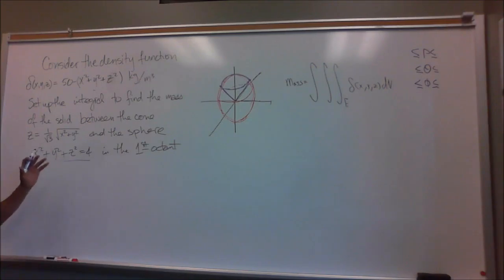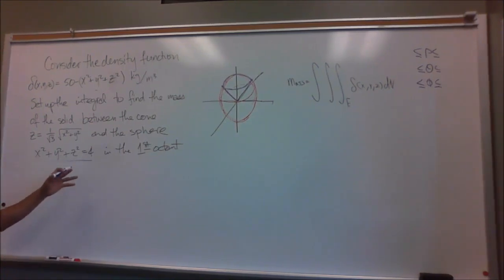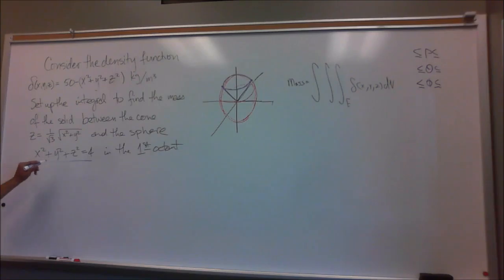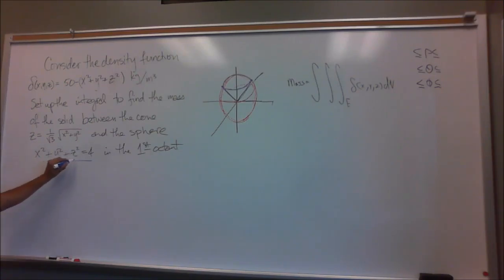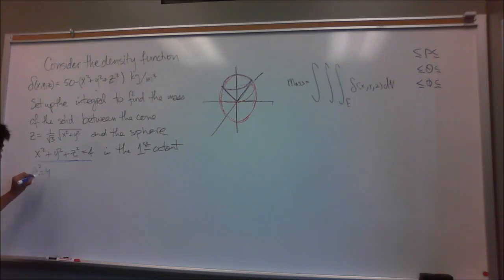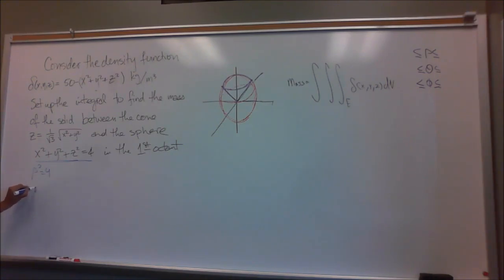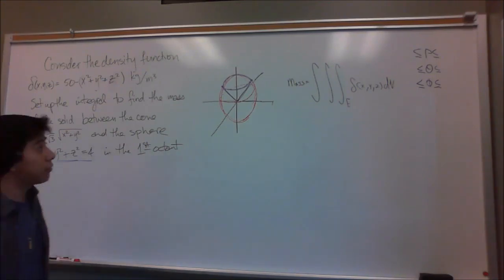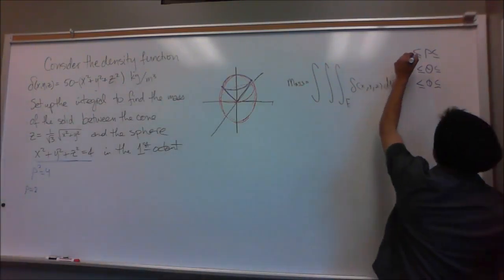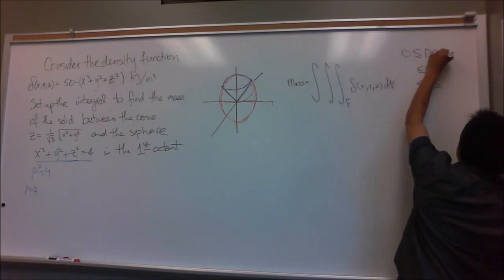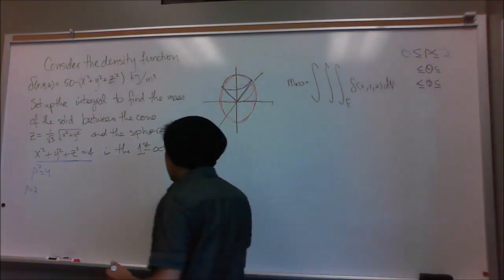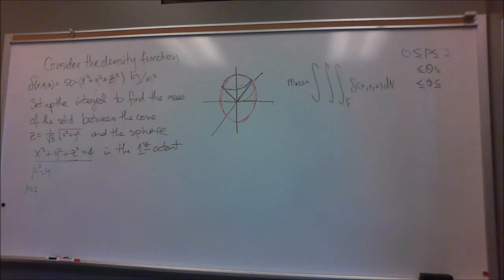The equation for the sphere is x squared plus y squared plus z squared equals 4, so our radius is 2. To convert to spherical coordinates, that becomes rho squared equals 4, so rho equals the square root of 4, which is just 2. Our first limits are going to go from 0 to 2. Now we also need to find phi.